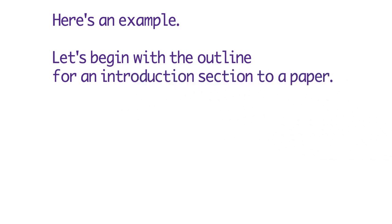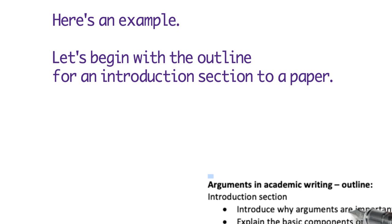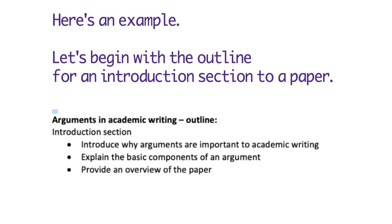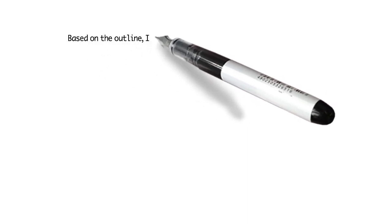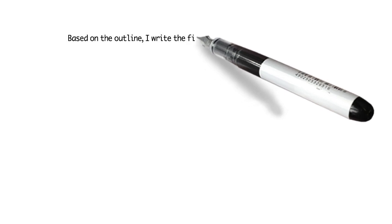Here's an example to show you what I mean. Let's begin with the outline for an introduction section to a paper about arguments in academic writing. In the introduction section I want to include three things: why arguments are important to academic writing, what the basic components of an argument are, and then to provide an overview of the paper. That's my plan — what I've decided I need to include in this section.